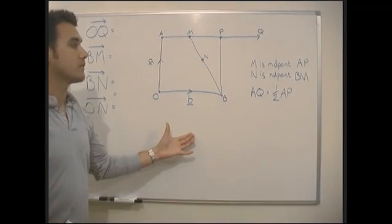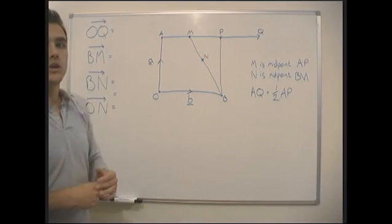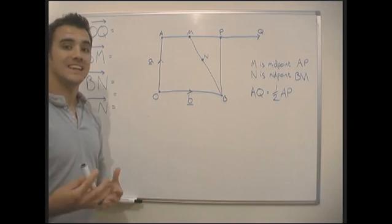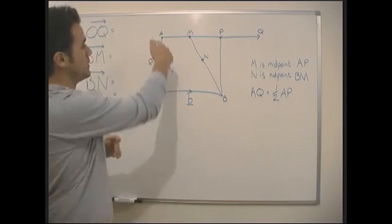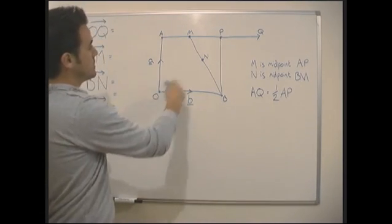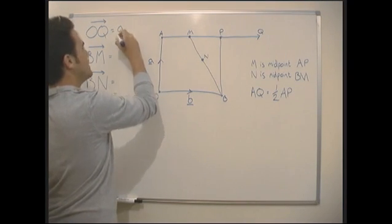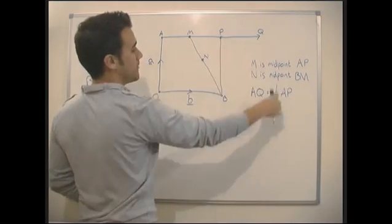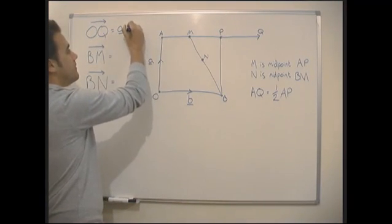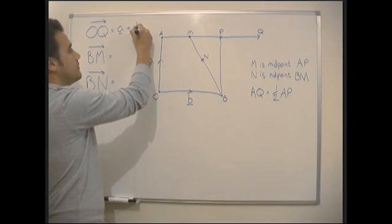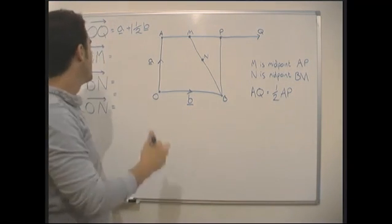This is a typical vector question: given all this information, we've got to find these vectors. Don't get freaked out — these are very straightforward questions and actually quite satisfying. The first vector we need to find is O to Q. Here's O and here's Q, so we're going to go plus a to start with, and then we're going along here. We're told that A to Q is one and a half times A to P, and A to P is just vector b, so it's going to be one and a half times b. So the answer is a plus one and a half b.